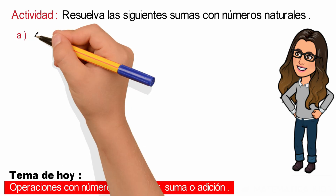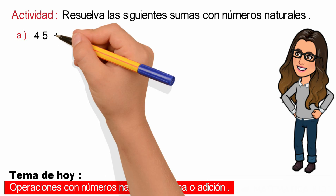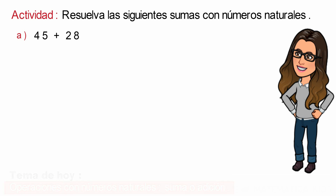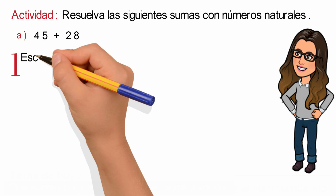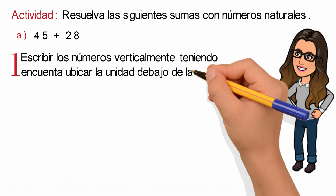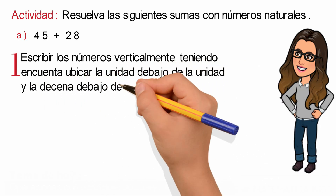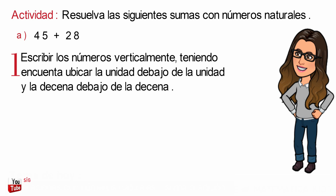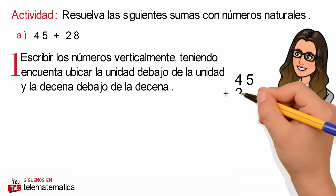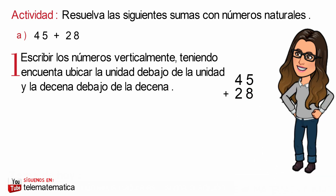Literal A: 45 más 28. Recordemos que para sumar números naturales con dos cifras y dos sumandos, debemos seguir el siguiente procedimiento. Paso número 1: escribir los números verticalmente, teniendo en cuenta ubicar la unidad debajo de la unidad y la decena debajo de la decena. Escribiremos los números 45 y 28 como nos indica el paso.